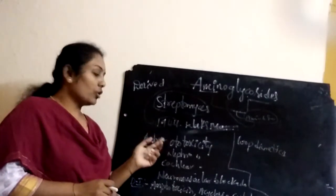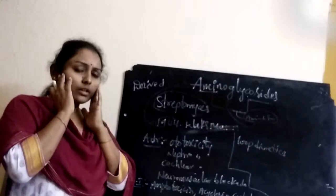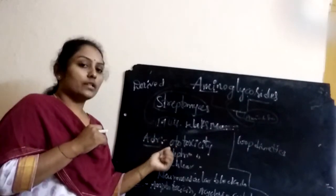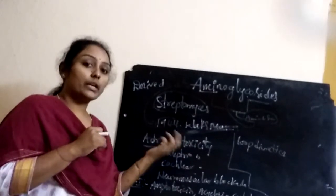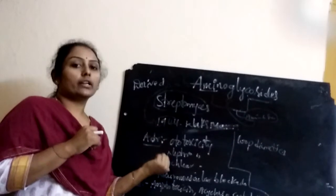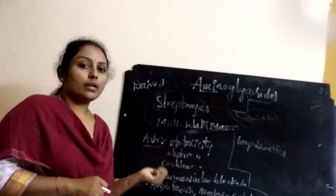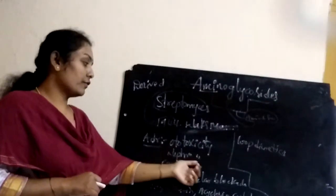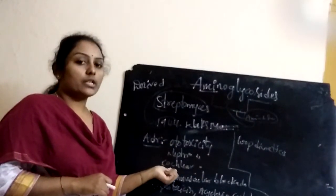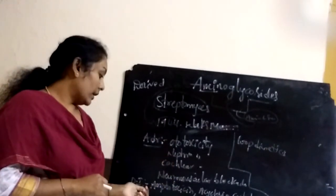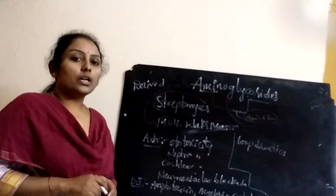Adverse effects of aminoglycosides include ototoxicity, nephrotoxicity, cochlear damage, vestibular damage, CNS effects, and neuromuscular blockade. Drug interactions occur with amphotericin, acyclovir, cephalothin, and loop diuretics. Contraindications include pregnancy, lactation, and renal impairment patients.